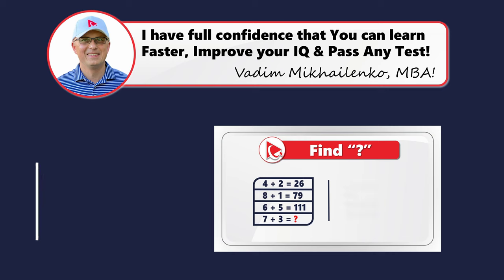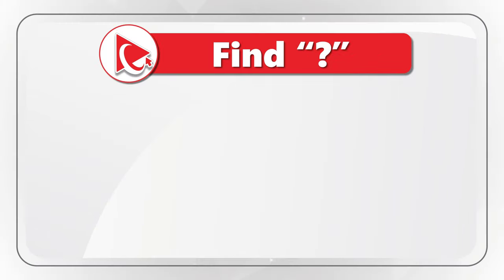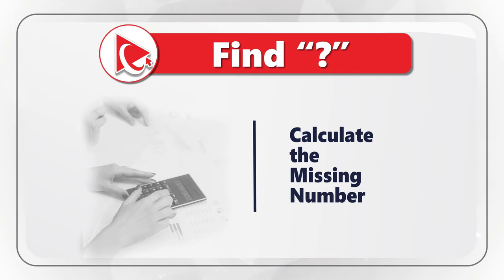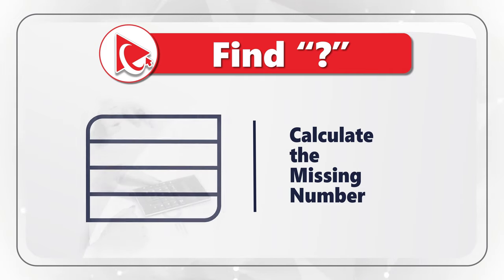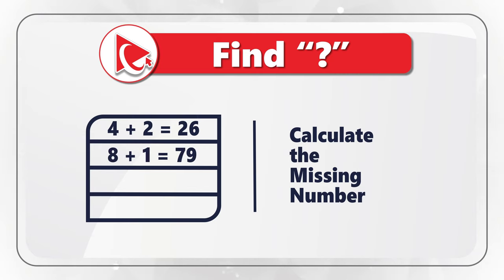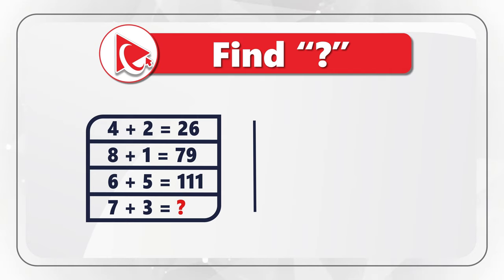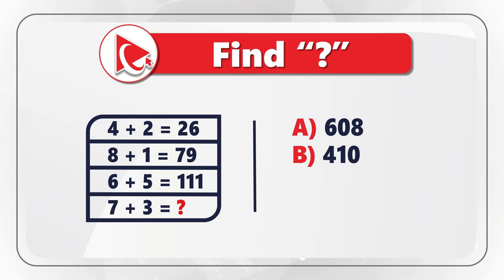Here's a very interesting question which tests your ability to find solutions to unusual problems. You're presented with four expressions. The first is 4 plus 2 equals 26. The second is 8 plus 1 equals 79. The third is 6 plus 5 equals 111. And in the fourth expression, 7 plus 3, you need to find the missing result. The four choices are: Choice A — 608, Choice B — 410, Choice C — 290, and Choice D — 375.